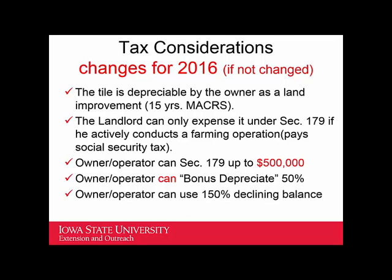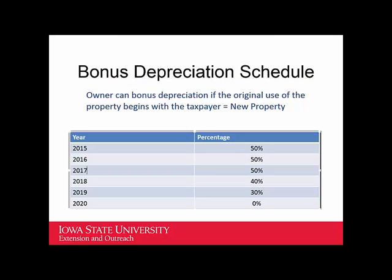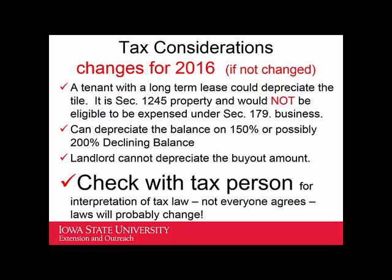Tax considerations are important, and these change every year. Probably the biggest one has been Section 179, allowing up to $500,000 in write-off for an owner-operator — making it easy to shelter a lot of that investment from taxes. There are also bonus depreciation rules that you should check with your tax preparer to see how they apply to you. An owner can take bonus depreciation as long as it's new property, but it does get phased out over time. Tax laws seem to get written after the year is over, so make sure you check with your tax person.